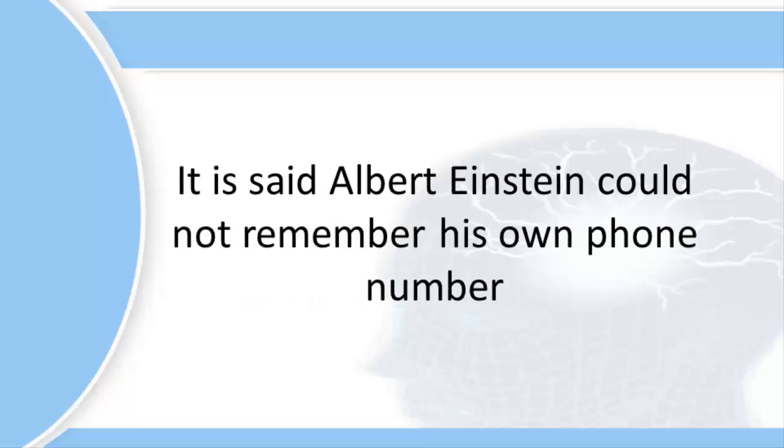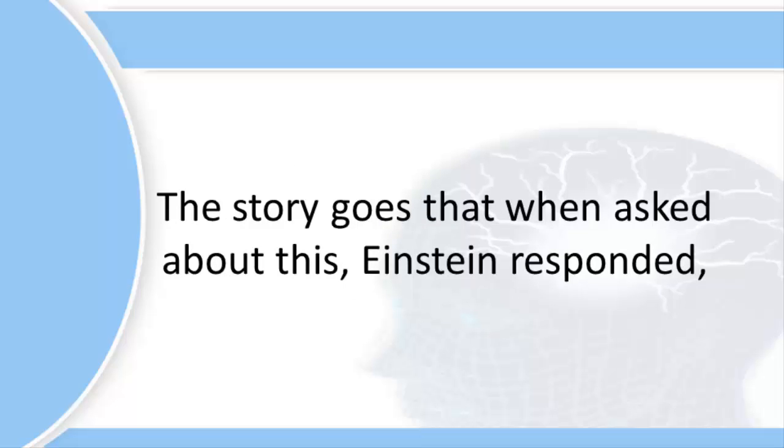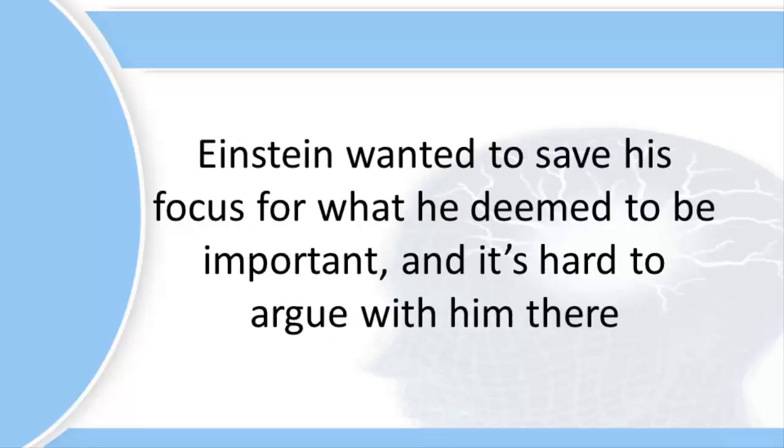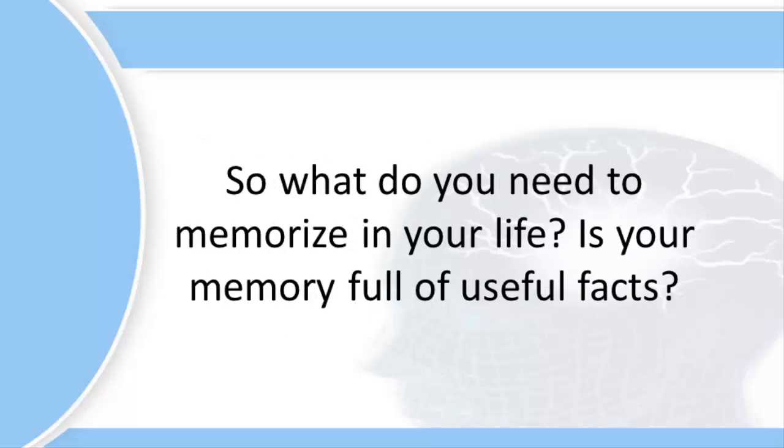It is said Albert Einstein could not remember his own phone number. The story goes that when asked about this, Einstein responded, 'Why should I memorize a number I never call when I can just look it up in the phone book if I need to call it?' Einstein wanted to save his focus for what he deemed to be important, and it's hard to argue with him there.